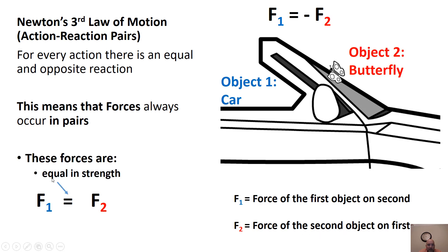These two forces have to be equal in strength. There's also a negative sign because they're opposite in direction — if one is to the right, the other is to the left; if one is north, the other is south.